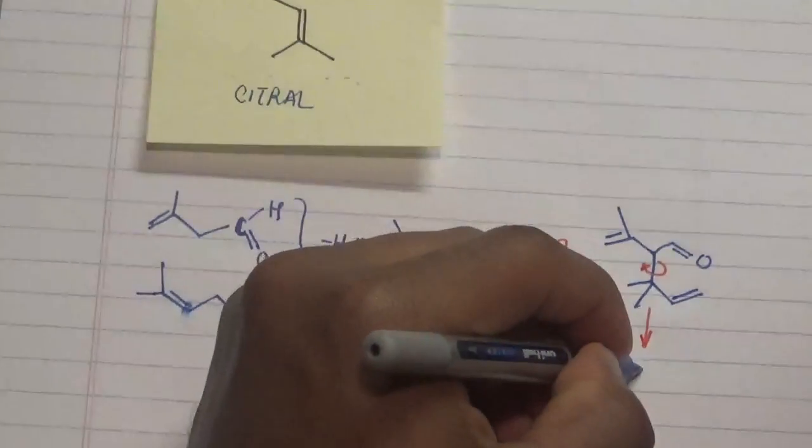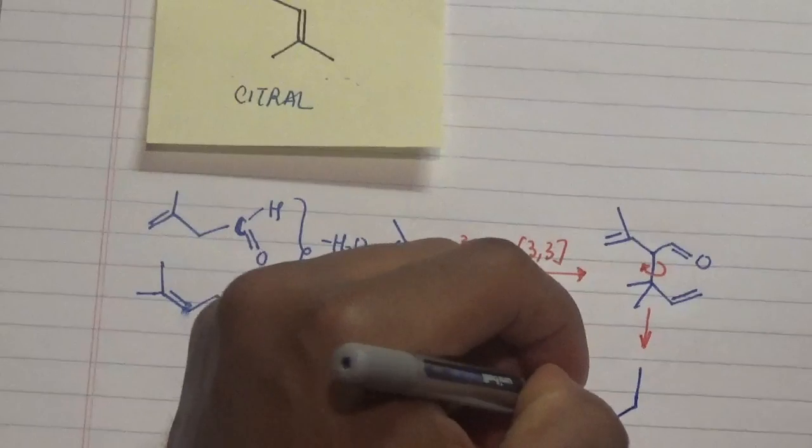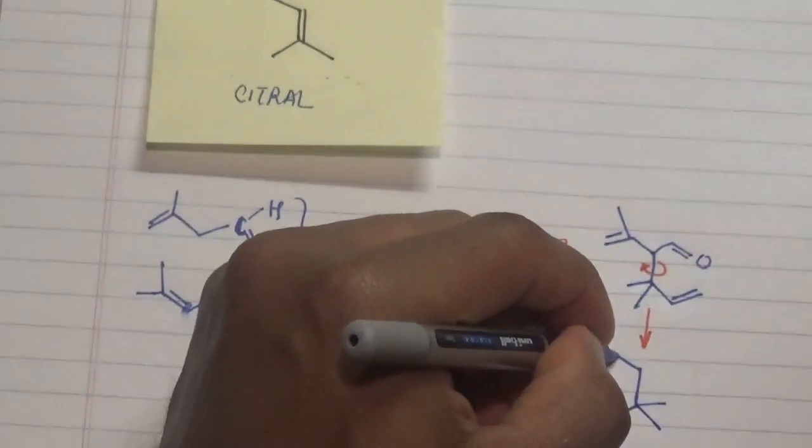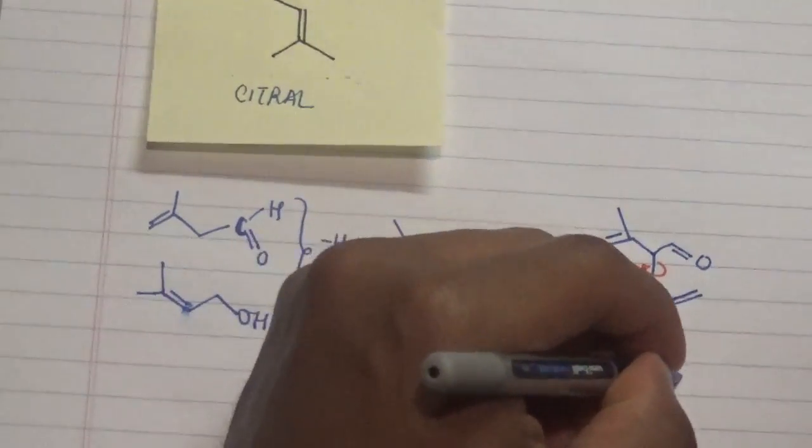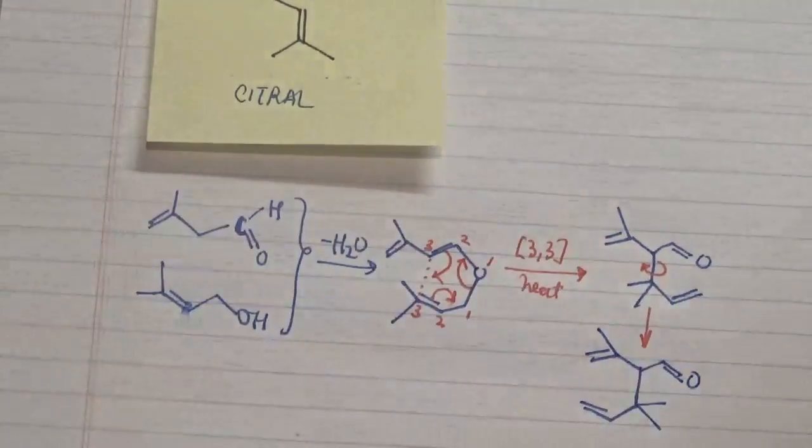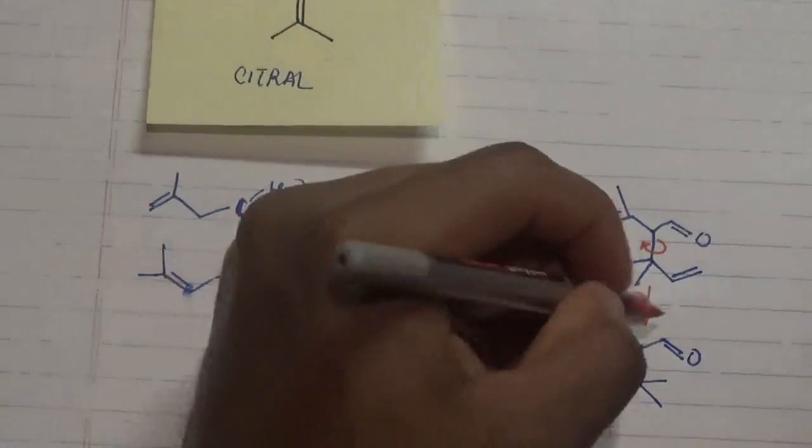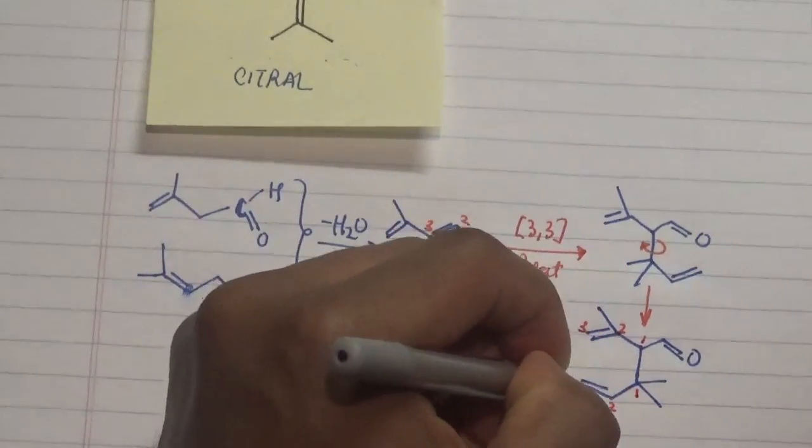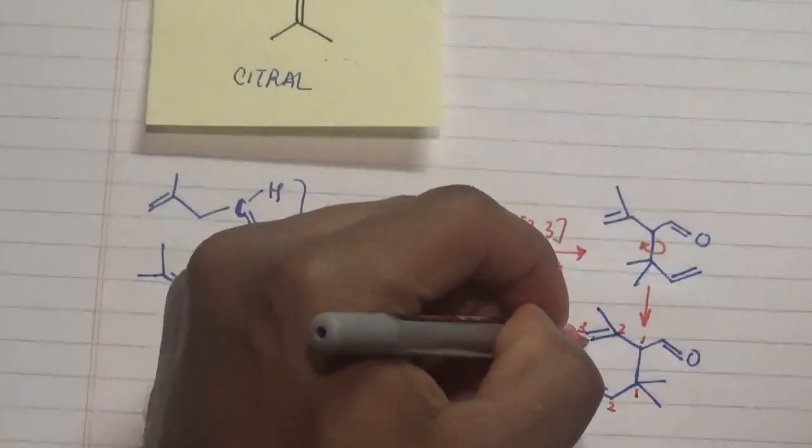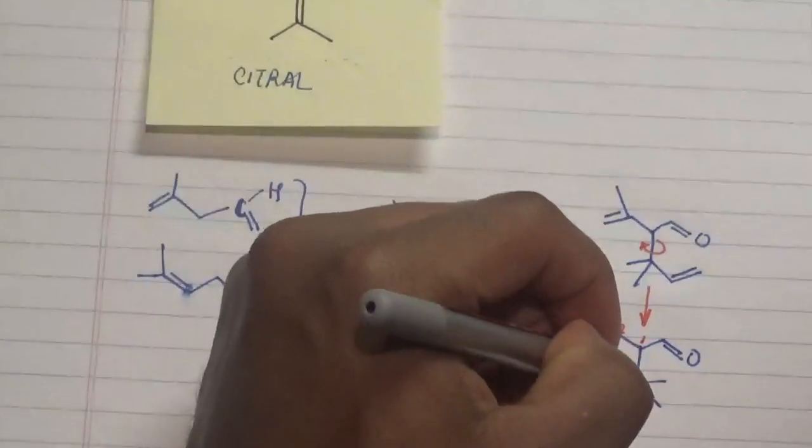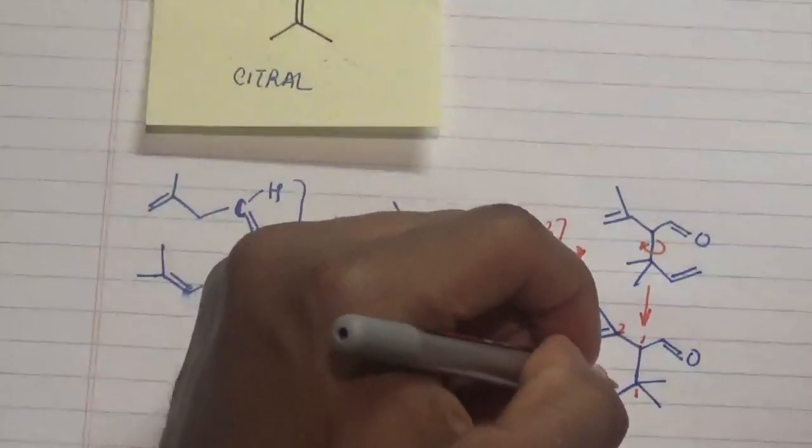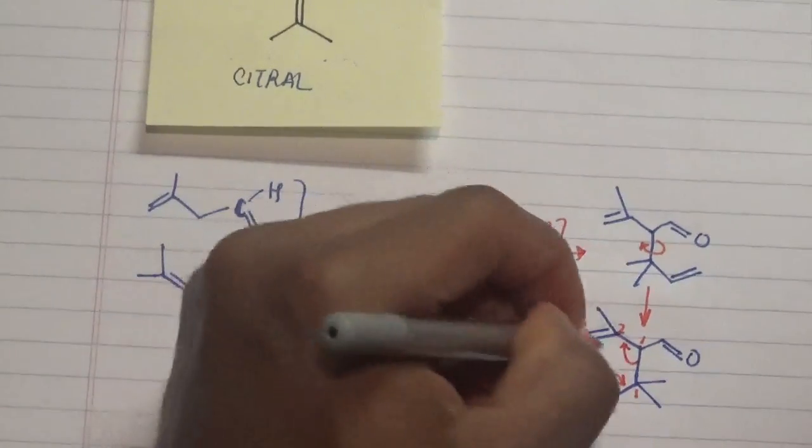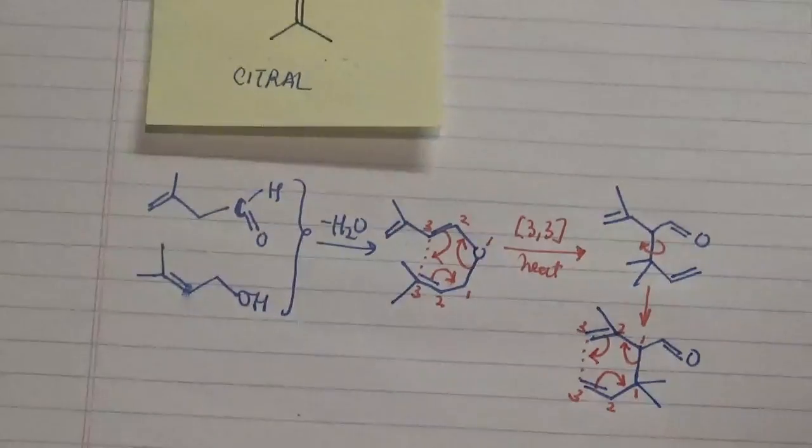We position our two adjacent double bonds in such a way that it will be really efficient in terms of performing another type of a 3x3 sigmatropic reaction. So by numbering we have one, two, three, and one, two, three. What we have now is the formation of our new sigma bond here and the breakage of our sigma bond over here.